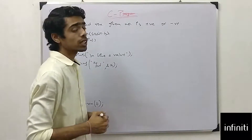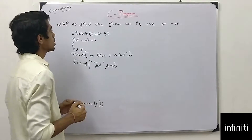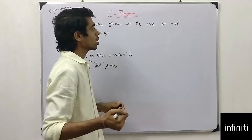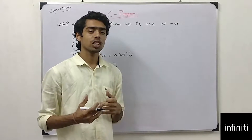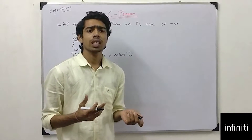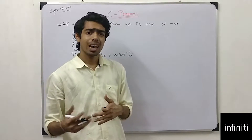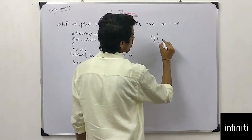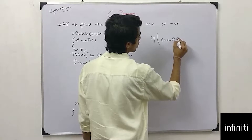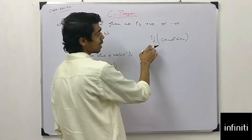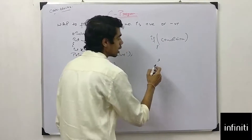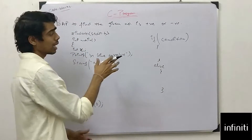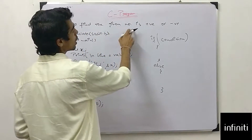Before going to this program, we first need to know the if-else condition. The program says: write a program to find whether the given number is positive or negative. So if a condition is satisfied, it will do something; otherwise, using else, it will do something else. This is basically the if-else condition.